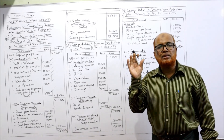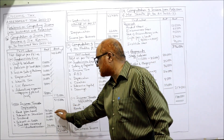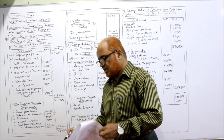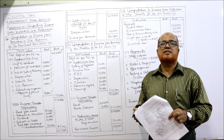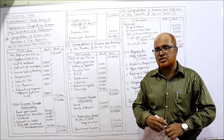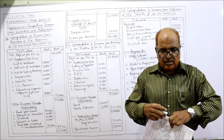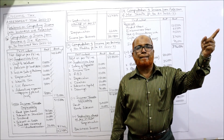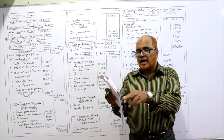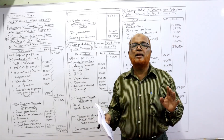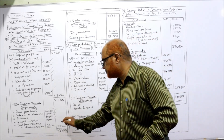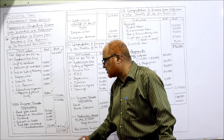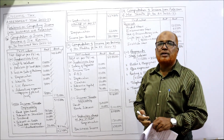Interest on securities is taxable under income from other sources, not business income — deduct. Dividend is also taxable under income from other sources — deduct. Interest on debt received is also taxable under income from other sources — deduct. Bad debts recovered: since they were disallowed earlier, they are not taxable — deduct. The total deductions are 87,200. So 5,15,000 minus 87,200 equals 4,27,800.